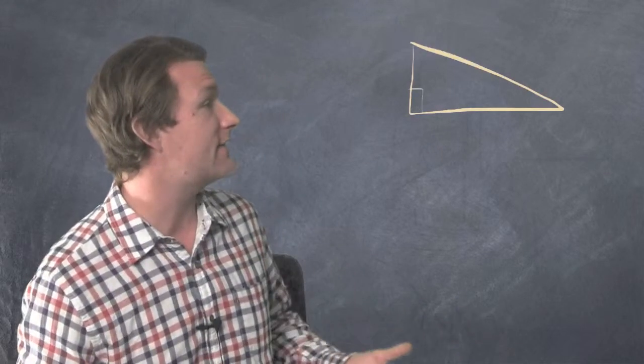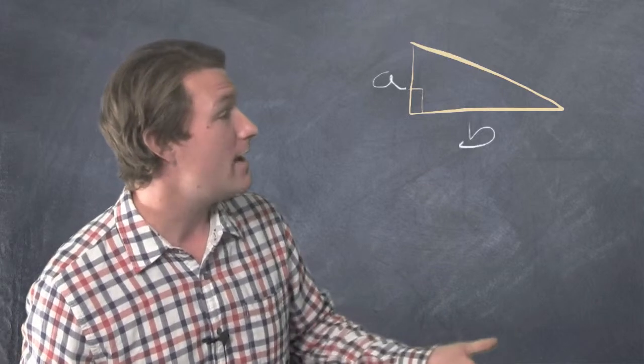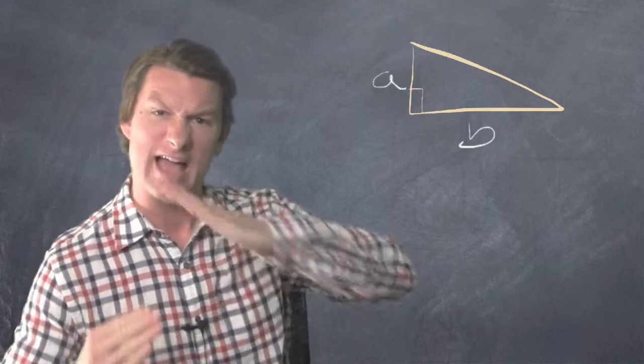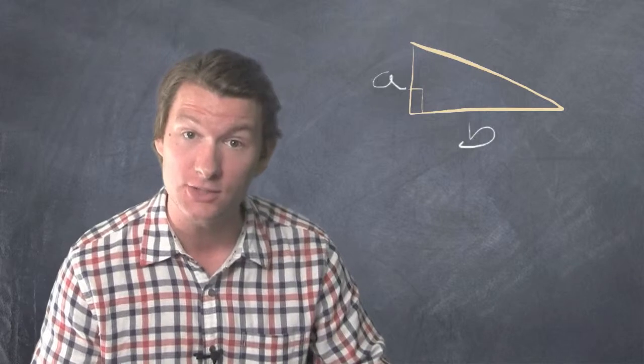We've got a right triangle, and let's say that one of the legs is A, the other leg is B, and the third side, the long diagonal side that we call the hypotenuse, will make that C.